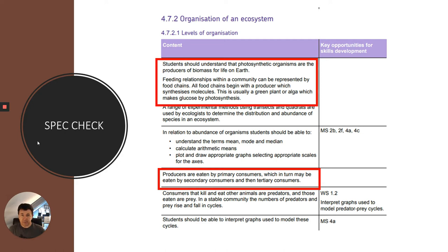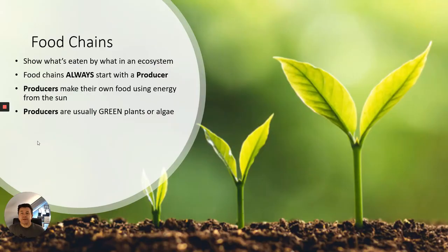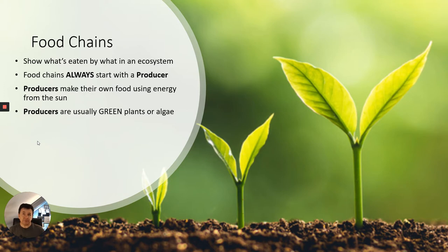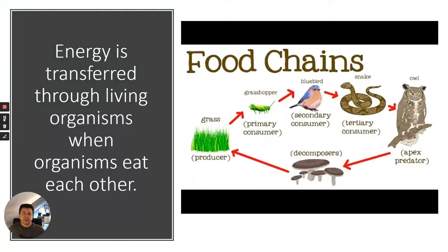A food chain shows what's eaten by what in an ecosystem. It's really important to state that all food chains on planet Earth start with a producer. Producers make their own food using energy from the sun — that is better known as photosynthesis. Producers are usually green plants or algae.